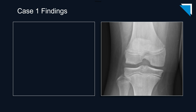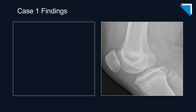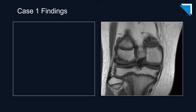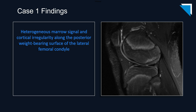Let's return to the radiographs to review the findings. There is cortical irregularity along the lateral weight-bearing surface of the lateral femoral condyle. The lateral view helps us more accurately characterize the location of the finding to the posterior lateral weight-bearing surface of the lateral femoral condyle. The same finding is clearly evident on this coronal T1-weighted image from the MRI, and here it is again along the posterior lateral weight-bearing surface of the lateral femoral condyle on this sagittal fluid-sensitive image.